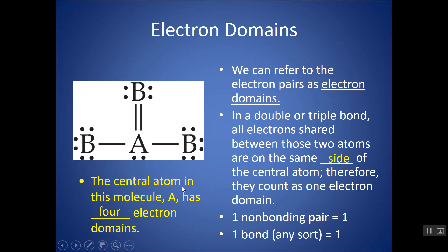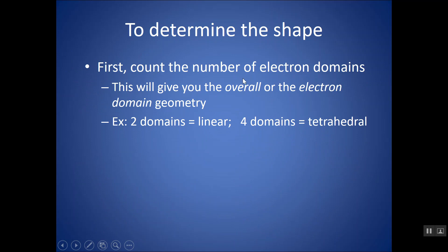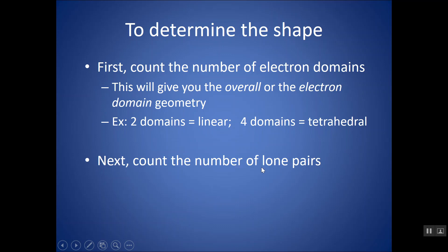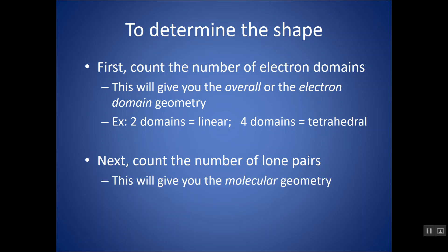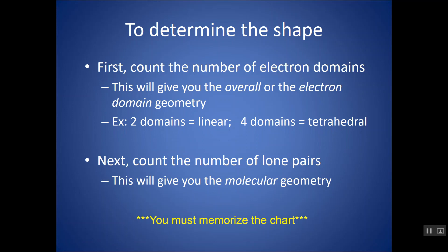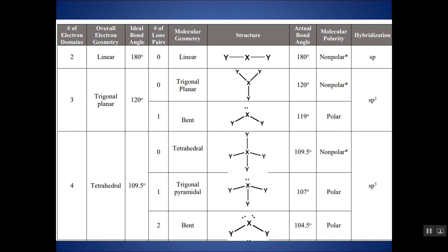Electron domains are going to help us figure out the molecular geometry, and we determine this for the central atom. To determine the shape, you first count the number of electron domains around the central atom, then count how many lone pairs you have, and that gives us the molecular geometry. We're going to use a chart for this. If you take out the chart for this chapter — there are extra copies on classroom as well — you can find the number of electron domains. For four domains, the overall geometry is tetrahedral — tetra meaning four.